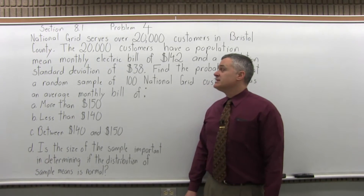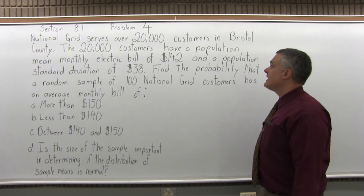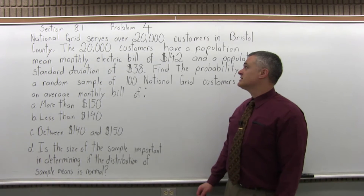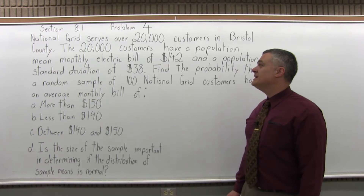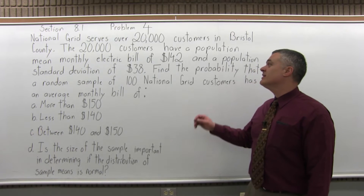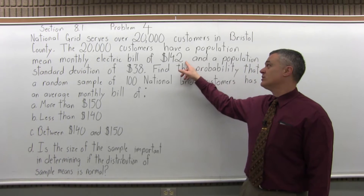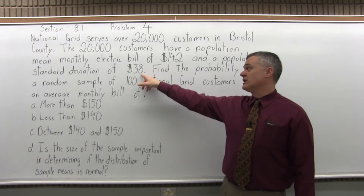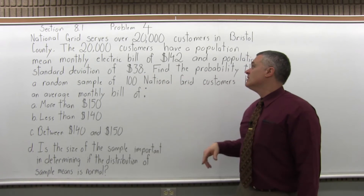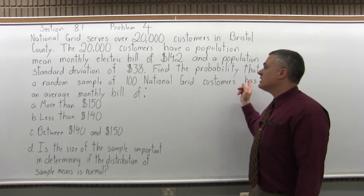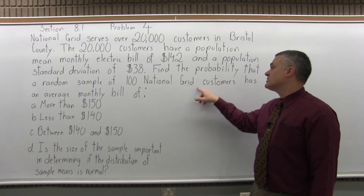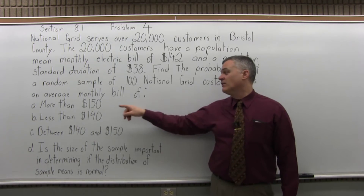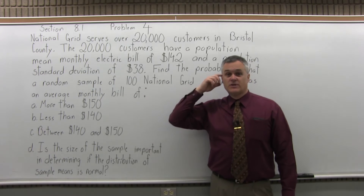National Grid serves over 20,000 customers in Bristol County. The 20,000 customers have a population mean monthly electric bill of $142 and a population standard deviation of $38. Find the probability that a random sample of 100 National Grid customers has an average monthly bill of more than $150.